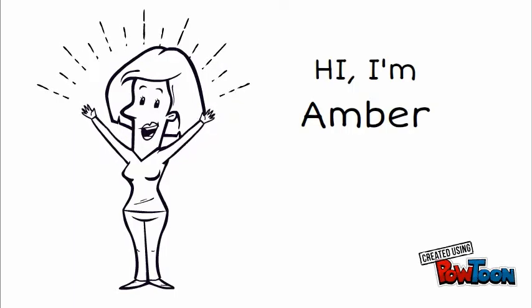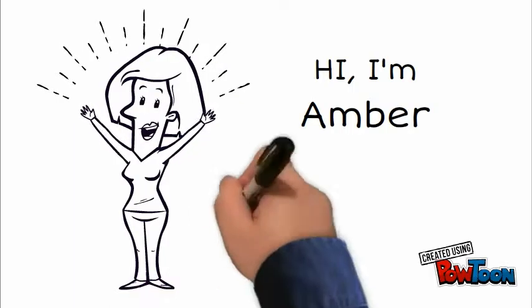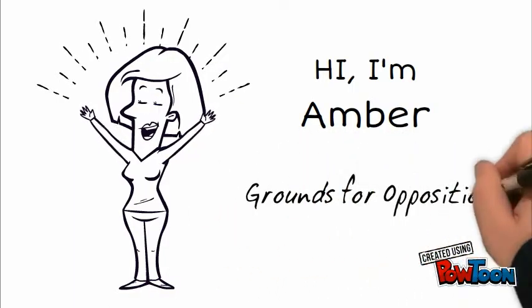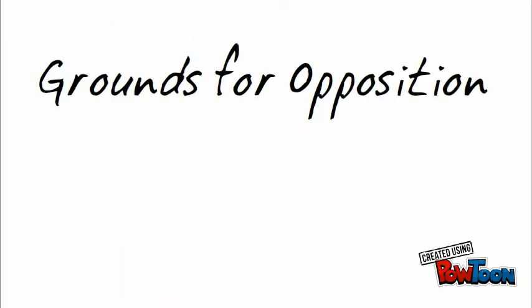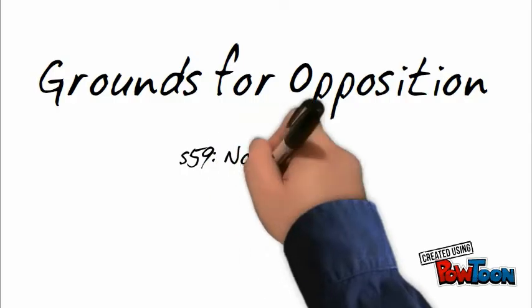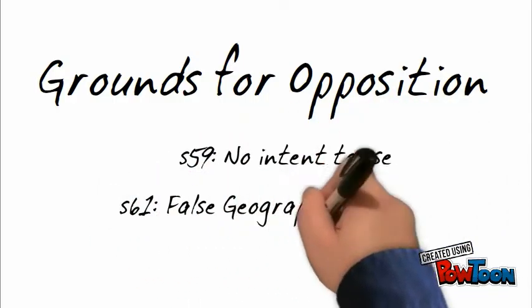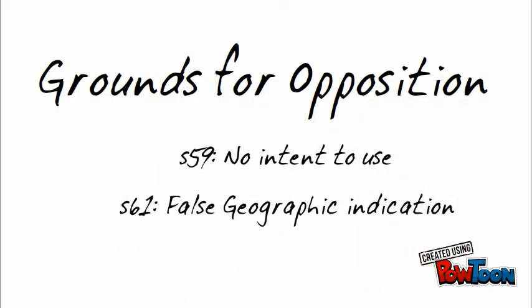Hi, my name is Amber and I will be discussing the grounds for opposing a trademark application. This video will explore two grounds for opposing a trademark application. Firstly, Section 59 of the Trademarks Act, which involves situations where there is no intent to use. And secondly, Section 61, which governs situations where there is a false geographic indication.